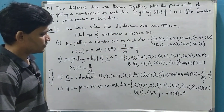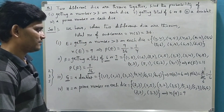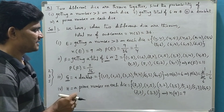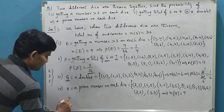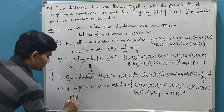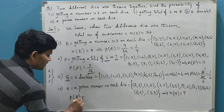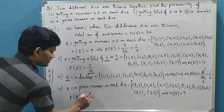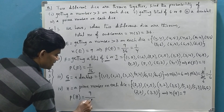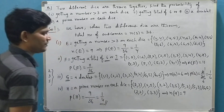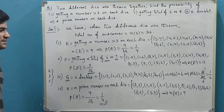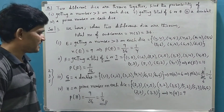Let us check: (2,2), (2,3), (2,5), (3,2), (3,3), (3,5), (5,2), (5,3), (5,5) — that is 9 favorable outcomes. So the probability of event H is 9 by 36, which equals 1 by 4. Thank you, I hope you understand.